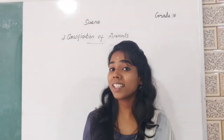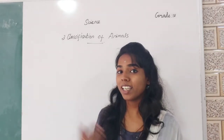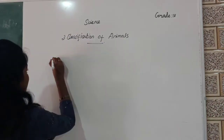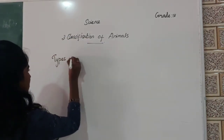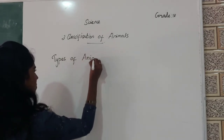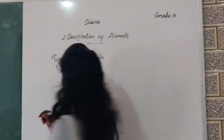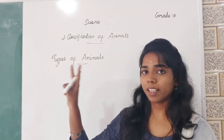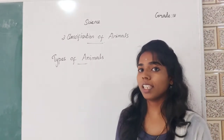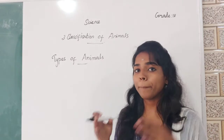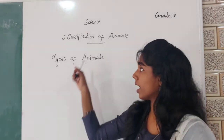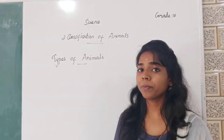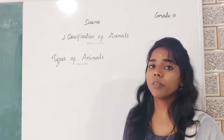Now students, tell me what are the things we learnt in this chapter. Yes, we learnt about the types of animals. The animals can be grouped into two types on the basis of presence or absence of a backbone. The animals are classified into two types: invertebrates and vertebrates.